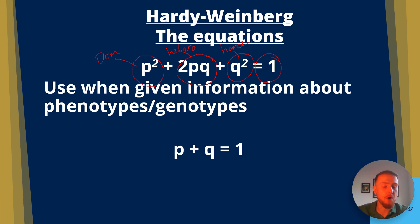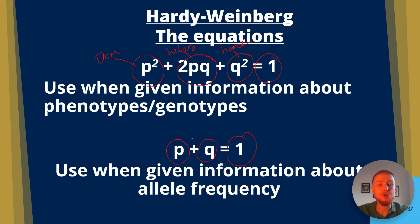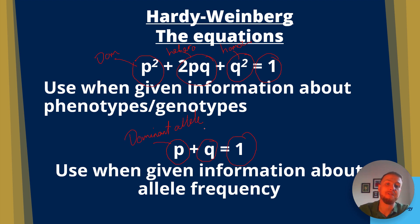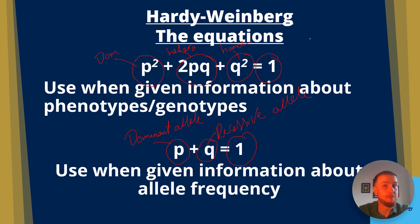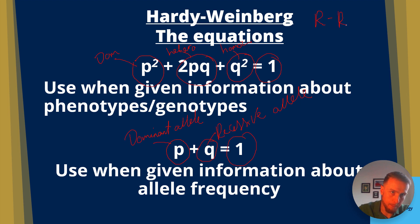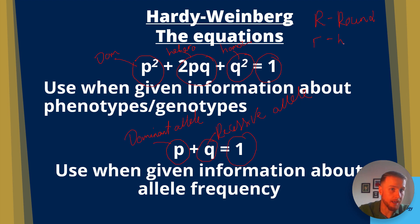The second equation is P plus Q equals 1. Use this when you're given information about allele frequency. Think of P as the dominant allele and Q as the recessive allele. For example, if we were looking at whether peas were round or wrinkly — big R is round and little r is the recessive wrinkly allele.